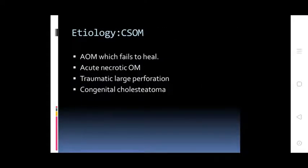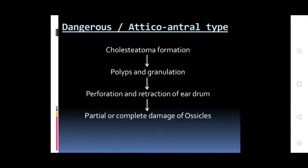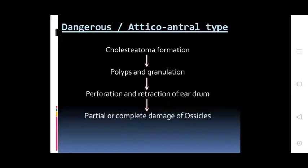Etiology of CSOM: AOM with false healing, acute necrotic OM, traumatic large perforation, and congenital cholesteatoma. Pathology — Benign Tubotympanic type: necrosis of eardrum portion with poor blood supply, necrosis of ossicular chain, sclerosis of mastoid bone, and polyp formation. Dangerous Atticoantral type: cholesteatoma formation, polyps and granulation, perforation and retraction of eardrum, and partial or complete damage of ossicles.